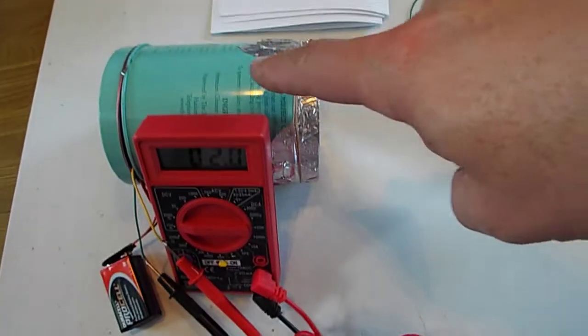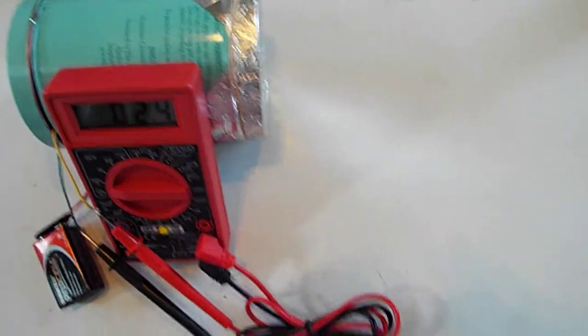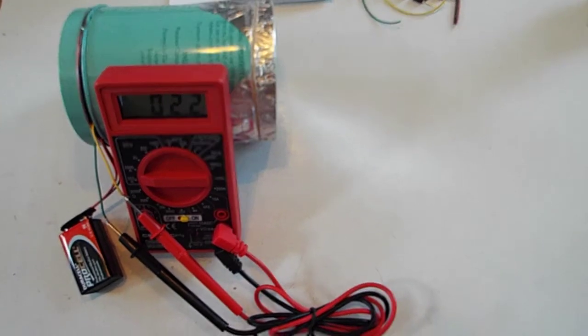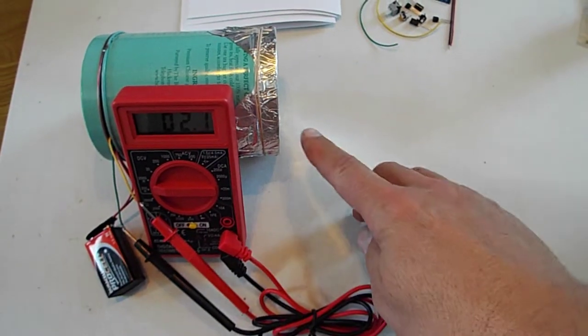The kit builder has to provide their own tin. A cookie tin or tea tin is preferred - tin is an easy-to-work-with metal, it's thin, and it solders too. You also provide your own 9-volt battery, aluminum foil, and rubber band.